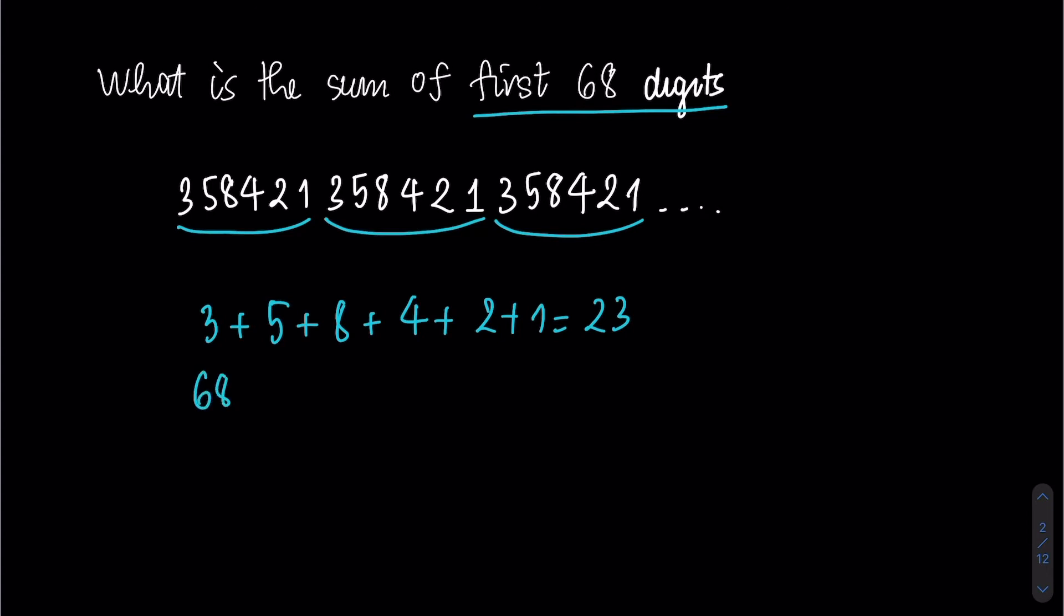Since they are asking for the sum of first 68 digits, therefore we need to divide 68 by 6, we get 11 remainder is 2.